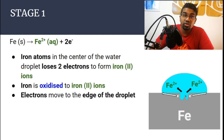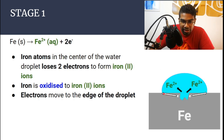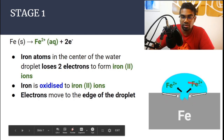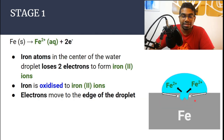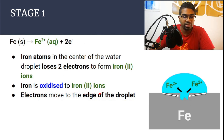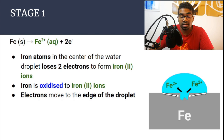The electrons travel from the center of the water droplet out towards the edge — all around, since this is a water droplet. Since iron loses electrons, iron is oxidized to iron-2 ions. This is the oxidation process that occurs here.